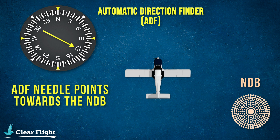Every one of these NDBs, and indeed every radio nav aid, has a maximum range at which it can be used. This is known as the designated operational coverage, or DOC. If you intend to use a certain NDB for navigation — for example, to fly the hold in your IR skills test — then you should check the DOC during your pre-flight planning.